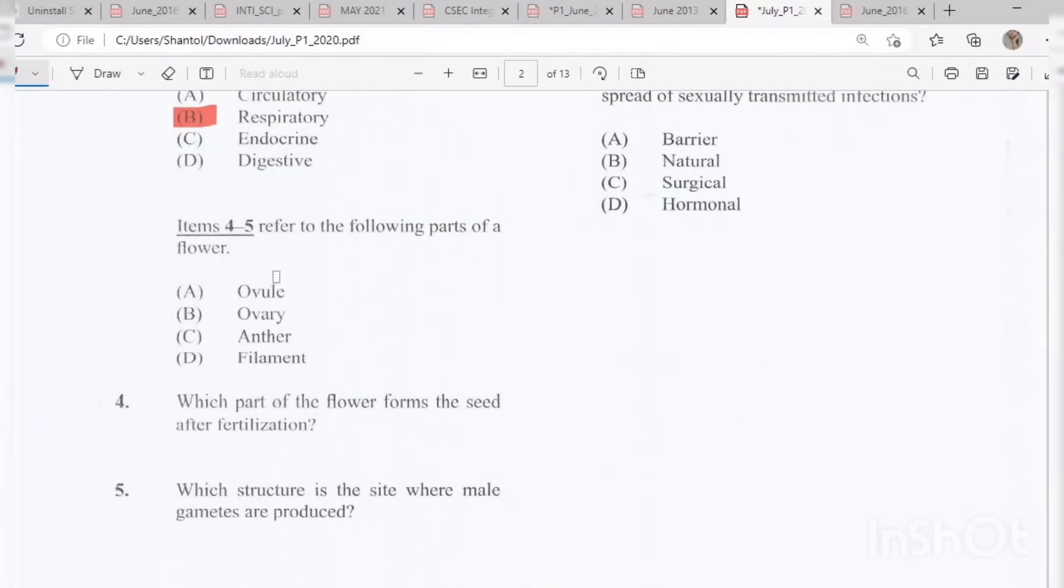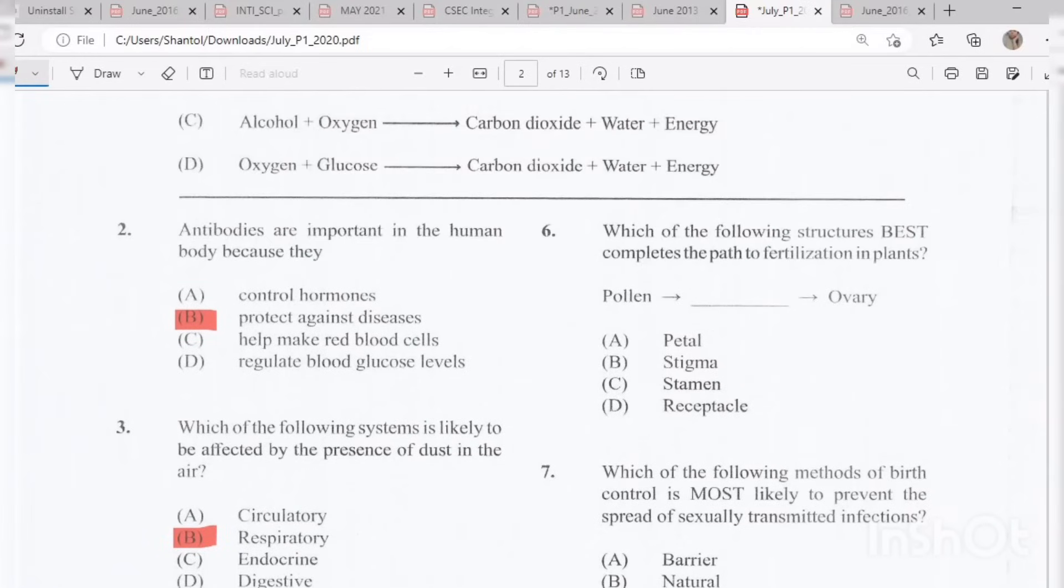Questions 4 and 5 refer to the following parts of a flower. Which part of the flower forms the seed after fertilization? The answer is A, the ovule. Number 5: Which structure is the site where male gametes are produced? The answer is C, the anther. Question 6: Which of the following structures best completes the path to fertilization in plants? Pollen to the ovary? The answer would be the stigma.